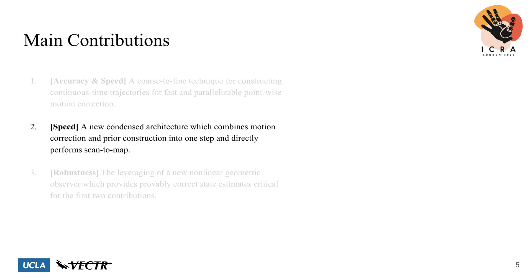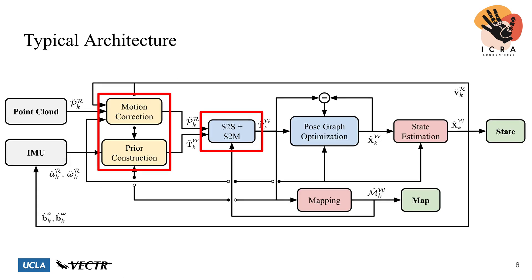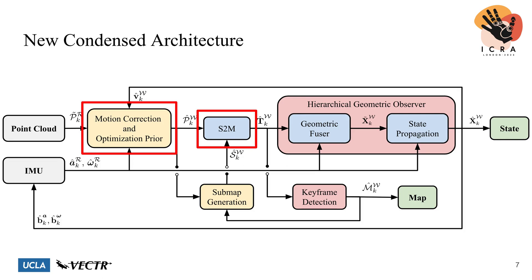We also propose a new condensed architecture for LiDAR inertial odometry, which combines motion correction and GICP prior construction into a single step, and also directly performs scan-to-map registration without scan-to-scan. This dramatically simplifies the LIO pipeline and significantly reduces computational overhead. Whereas in a typical architecture you have motion correction and prior construction in separate processes and a scan-to-scan alignment before scan-to-map, we realize that both steps require IMU integration, and by doing so in the world frame we can do it in one shot. This enables us to completely remove scan-to-scan and directly perform scan-to-map, condensing the pipeline and speeding up the entire algorithm without a loss in performance.